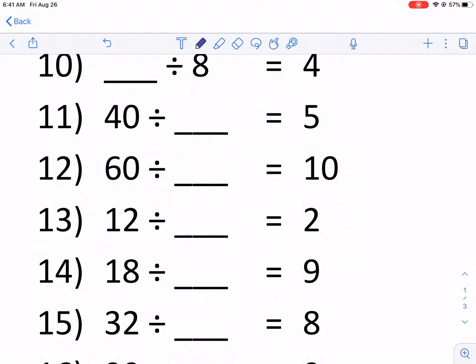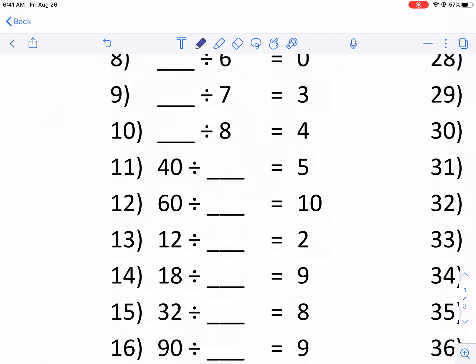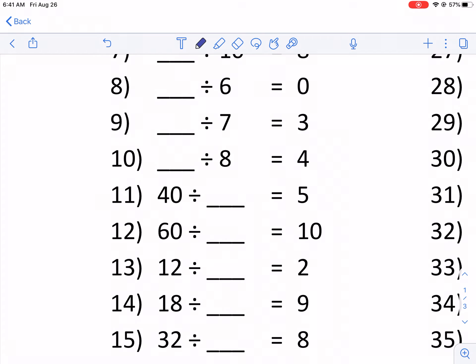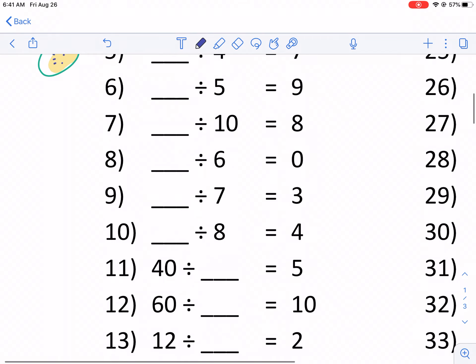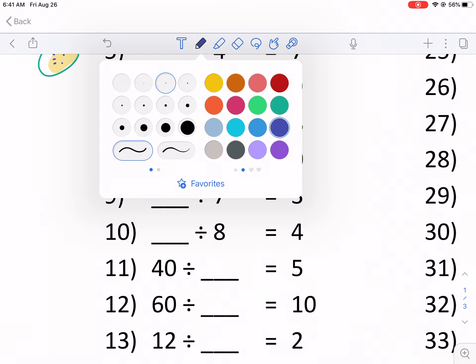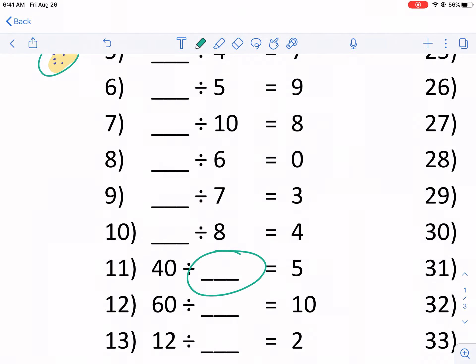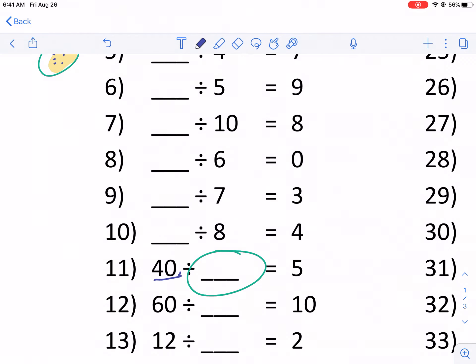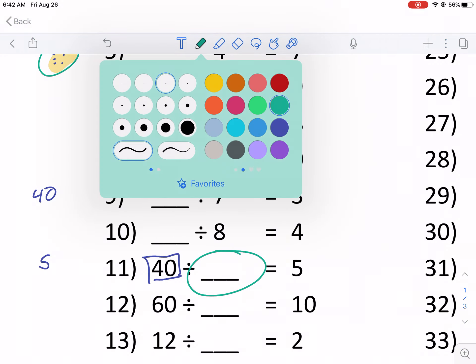And that's thinking about 40 divided by something equals 5. A little bit different now. So now we know what the total was. And we're told this is how many groups we had. Now we don't know how many groups there were. So we know we had 40 total. So if we're thinking 40 total dots, that one's going to be hard to draw. So we have 40 total. And we end up with 5 in each group. So we're looking for the number of groups.